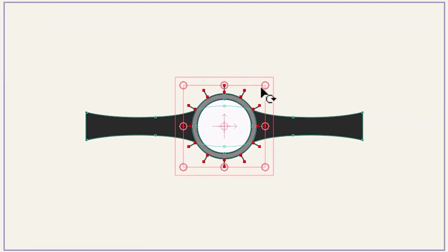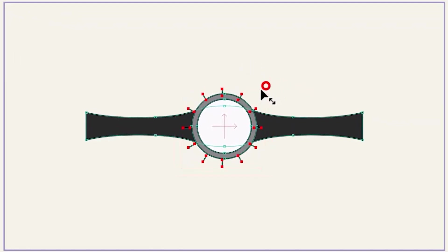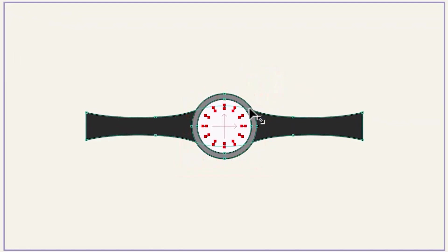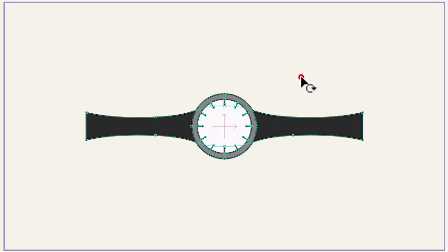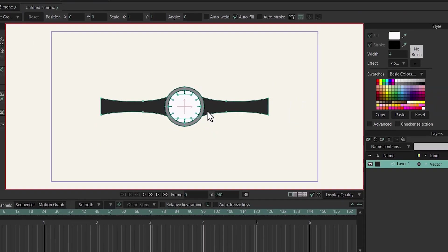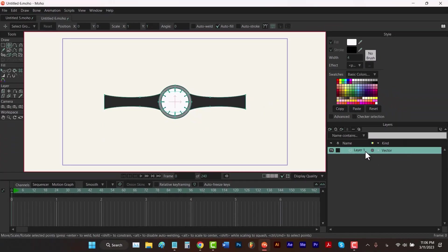Let's select the marks again. I'm gonna drag it from the corner — by holding down Alt I can do it from the center. To check their positions I have to hold down Control and click somewhere. Let's call this layer 'body'.